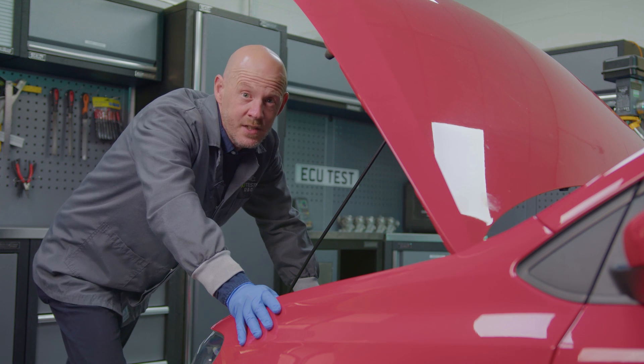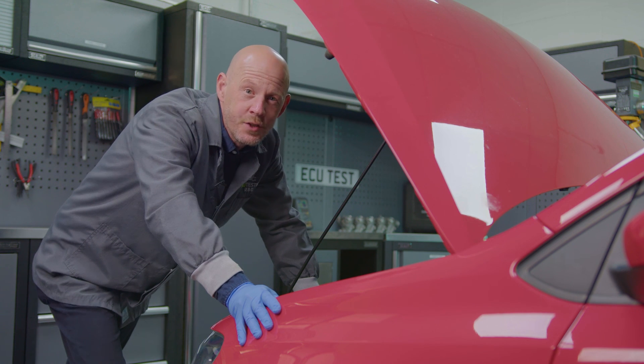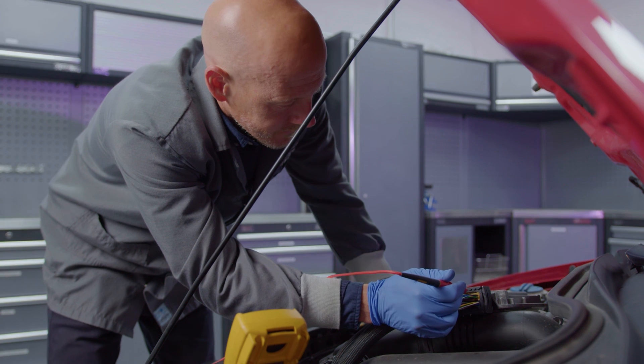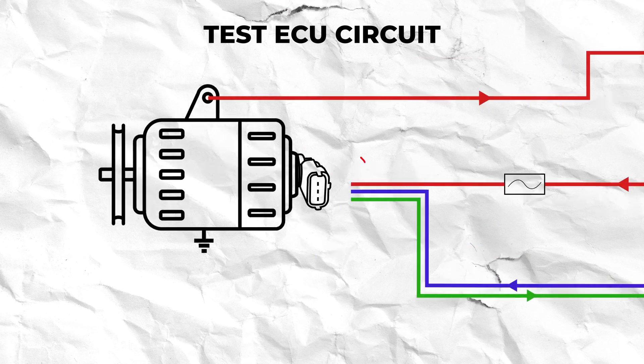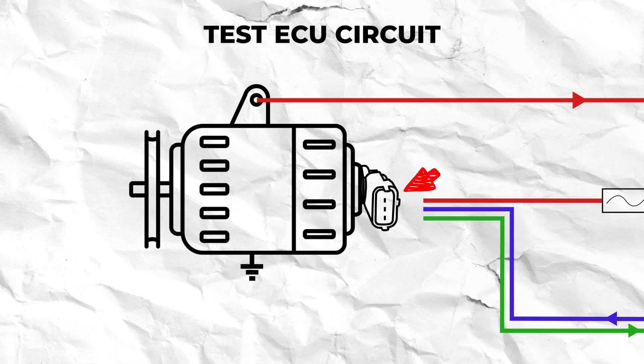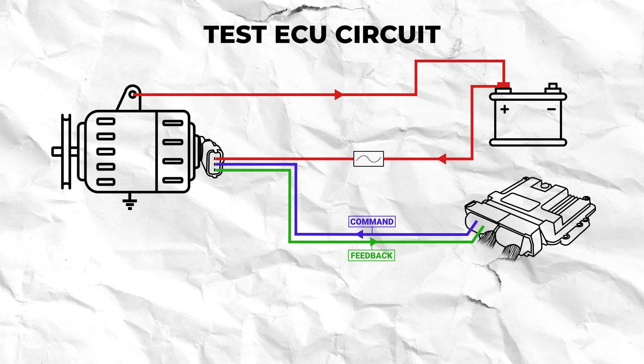If all of these tests come back okay then the final thing to check would be the circuit from the ECU to the alternator. This is only relevant to smart charging systems with alternators that have three or four pin connectors containing either a signal wire or a command and feedback wire to the ECU.